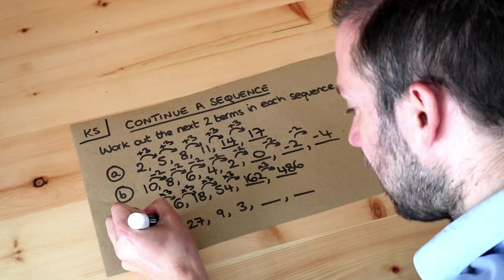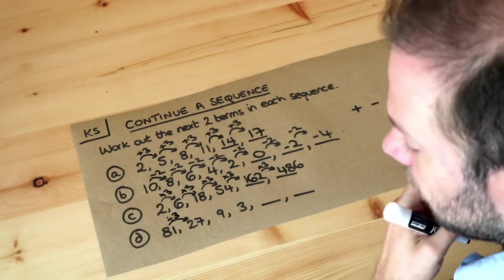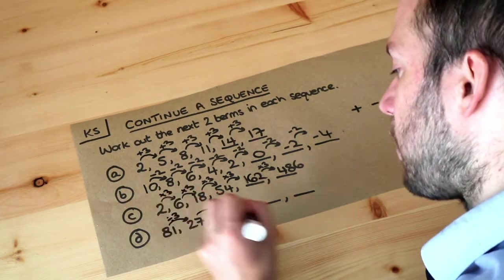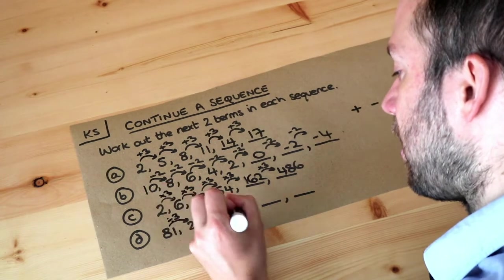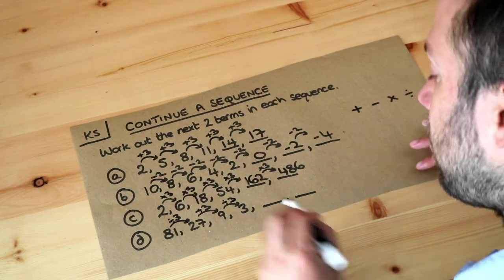Well can you see, to get from 81 to 27, that's getting 3 times smaller. If that's hard to see, just use your calculator. And then going from 27 to 9, that again is getting 3 times smaller. Then 9 to 3, we're getting 3 times smaller. So we continue that pattern.